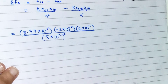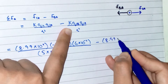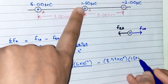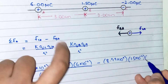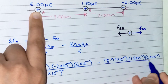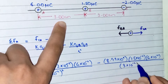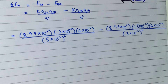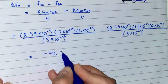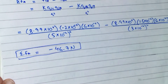For the second term: K = 8.99×10⁹, Q_B = 1.5×10⁻⁶ C, Q_A = 6×10⁻⁶ C, and the distance between A and B is 3 cm = 3×10⁻² m, squared. Plugging all these values into the calculator gives a sum of all forces on charge A equal to −46.7 Newtons.